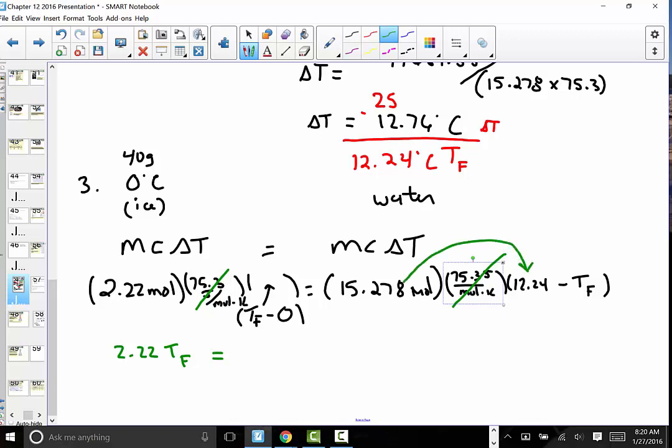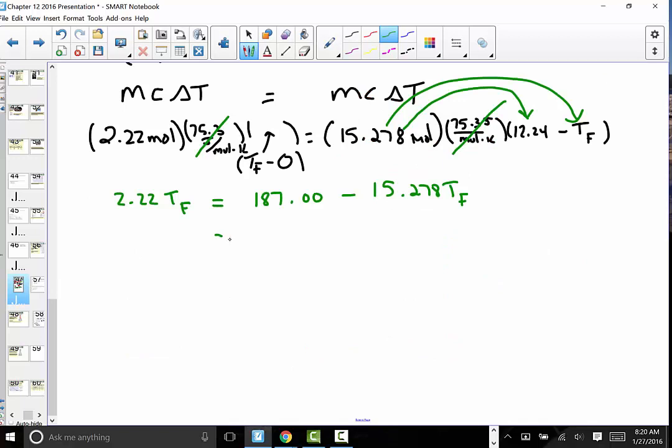Here we do have to distribute, so I'm going to multiply 15.278 times 12.24. 15.278 times 12.24, and I'm getting 187.00274 minus, and then distribute here, you're going to get 15.278 Tf. Let's get the variables together, so I'm going to add 15.278 to both sides. 2.22 plus 15.278 is 17.498 Tf, and that is equal to 187.00274. Divide both sides to isolate your variable.